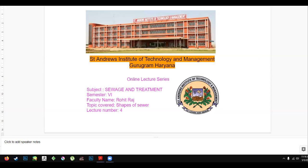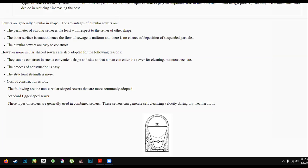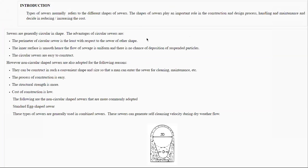Today we are going to discuss different shapes of sewers. Types of sewers normally refer to different shapes of sewers. In our previous lectures, we classified sewer systems on the basis of the material they are made of. Now we are discussing different types of sewers, which will classify them on the basis of their shapes.